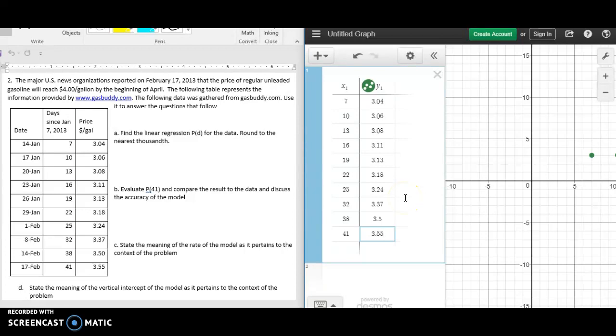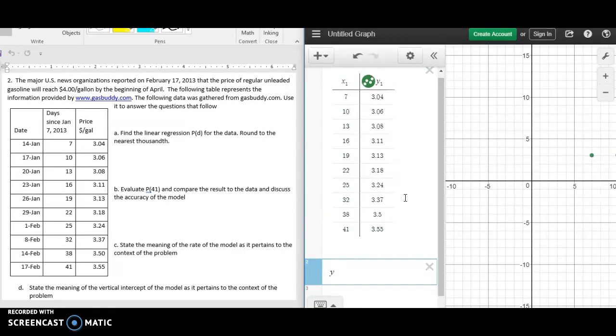Our information is entered into Desmos, and then we're going to start a new line. This time we're going to type in y is approximately equal to, so the little tilde, ax plus b.